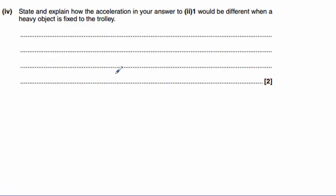Finally, part four asks us to state and explain how the acceleration in your answer to II1, that is the initial acceleration, would be different when a heavy object is fixed to the trolley. Well, we know that force equals mass times acceleration. So acceleration is equal to force divided by mass. Now, if the mass were to increase for a constant force, we would have to see that the acceleration would decrease because acceleration is inversely proportional to the mass.